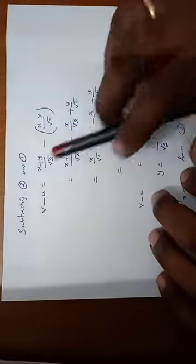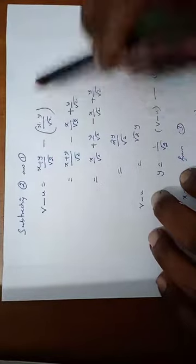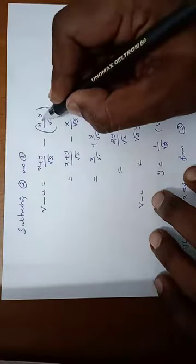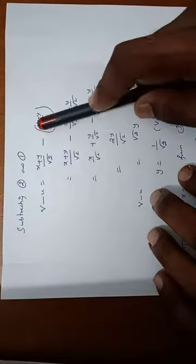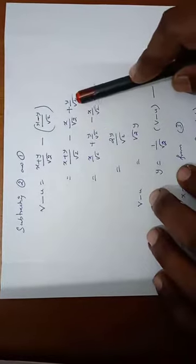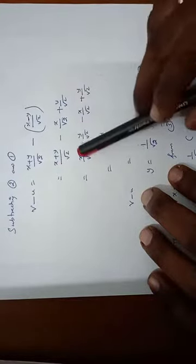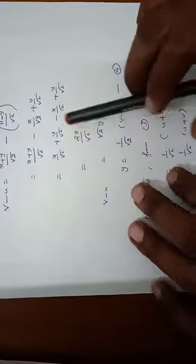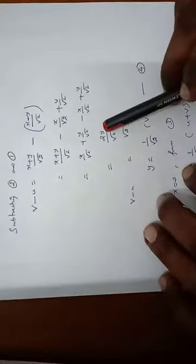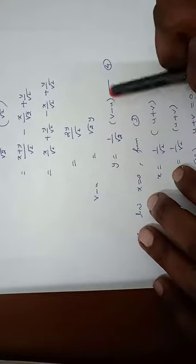Subtracting equation 1 from equation 2: v − u = (x+y)/√2 − (x−y)/√2. The x terms cancel, leaving 2y/√2 = √2·y. Therefore y = (1/√2)(v − u), which is equation 4.